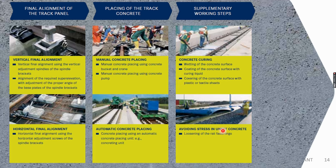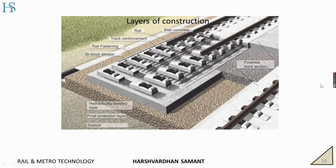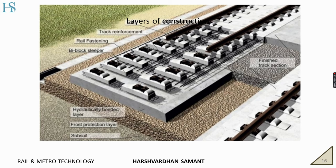This is the cross-sectional view. The height will vary depending on the subgrade and properties of the underneath soil. Here we have shown the layers of construction. From subsoil, we move on to frost protection layer, then HBL layer. Then we place twin block sleepers, then rails using temporary fastenings. Then we do concreting, and then permanent fastenings are laid. The gap between two tracks is filled up with asphalt or concrete.